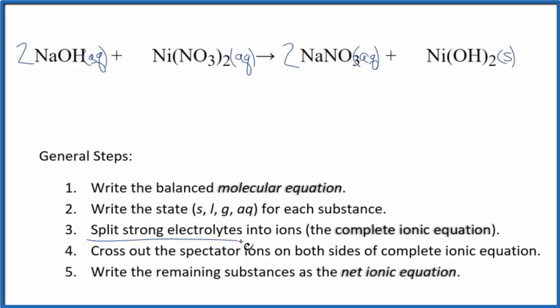Now we can split the strong electrolytes apart into their ions for the complete ionic equation. Sodium is in group 1. That has a 1 plus charge. The hydroxide ion always has a 1 minus. So I have 2 sodium ions. And I won't write the states right now. Let's do that at the end. Plus, 2 goes to everything. 2 hydroxide ions.